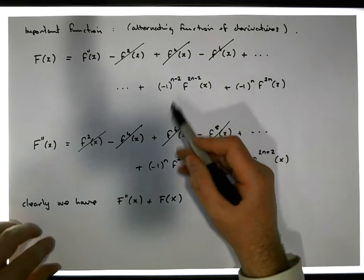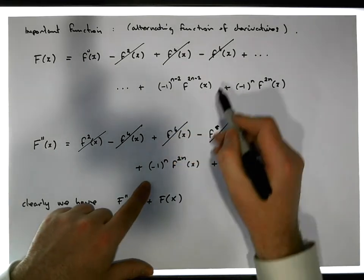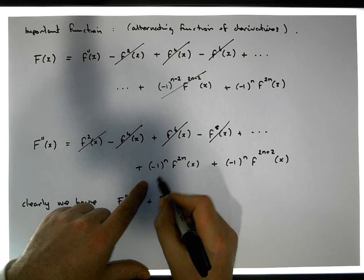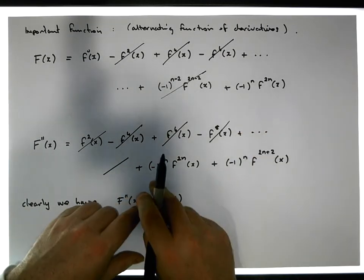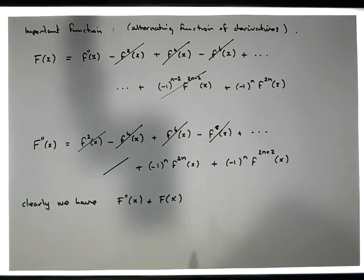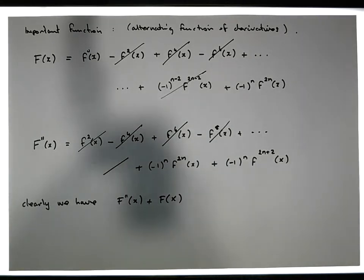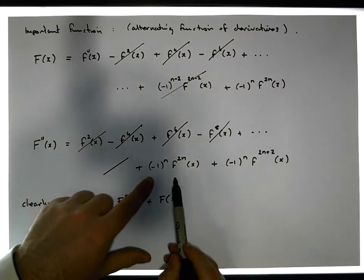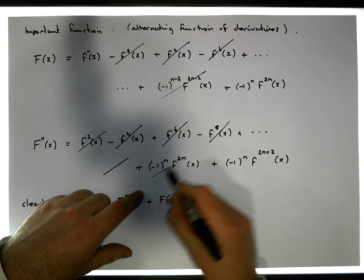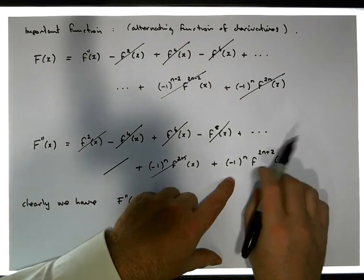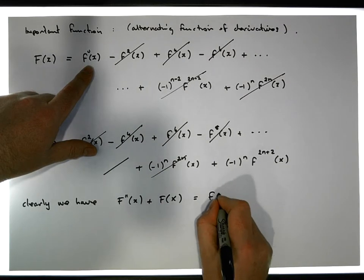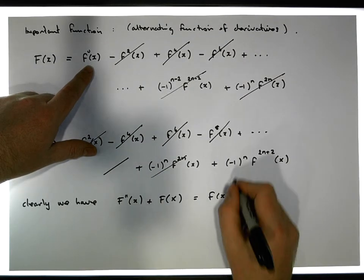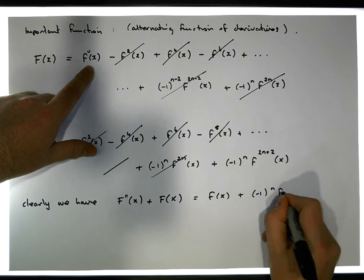This term here cancels with the one just in front of it. Don't forget there's a negative sign here — maybe we can't see that clearly. This one here just cancels with this one here, and what we're left with is f of x, the original function, plus minus one to the n times f of the (2n+2)-th derivative of x.